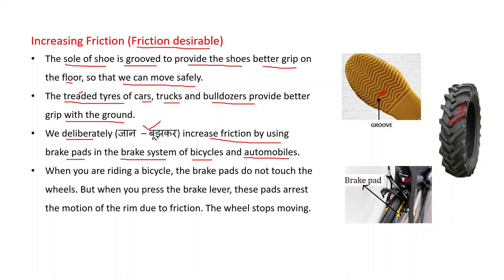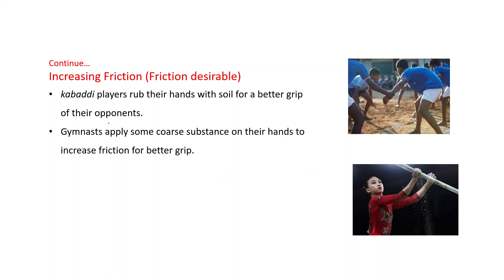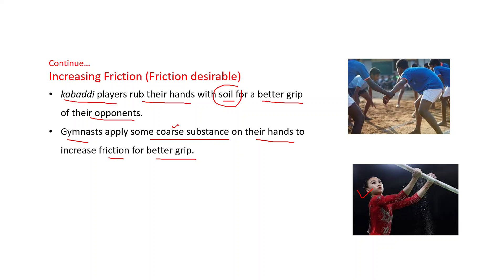We deliberately increase friction using brake pads in the brake system of bicycles and automobiles. When riding a bicycle the brake pads do not touch the wheels, but when you press the brake lever these pads decrease the motion of the rim due to friction and the wheel stops. Kabaddi players rub their hands with soil for a better grip on their opponents. Gymnasts apply a coarse substance like chalk powder on their hands to increase friction for better grip.